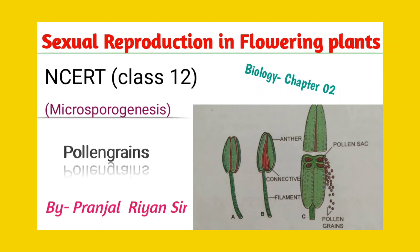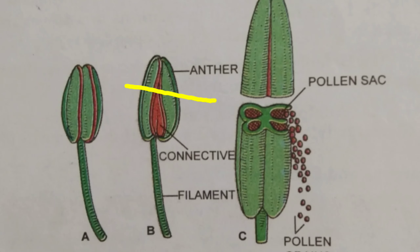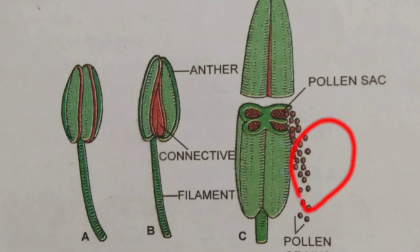The first step is microsporogenesis. Microsporogenesis is the process of formation of the male spore or microspore. This male spore or microspore is produced within the male reproductive part of the flower, that is the androecium. We already know that the stamen or androecium has three main parts: the anther, filament, and connective. The anther is bilobed, and when we dissect the anther, we can see the pollen sac.